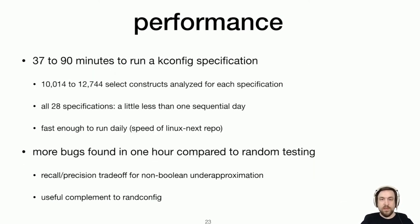So in terms of performance, each kconfig specification for each architecture took between 37 and 90 minutes or so to run and analyze between 10 and 12 or so thousand select constructs. And so doing all of these 28 architectures takes a little less than a day, but if you can parallelize this, then you can get this done in, you know, an hour and a half. And the kind of main takeaway here is that compared to random testing for an hour of doing this, even in parallel, 28 parallel threads, we found many more of these unmet dependency bugs. And so we get this kind of recall and precision trade-off for this under-approximation that we had. And it's potentially a useful complement to randconfig for these kinds of bugs.